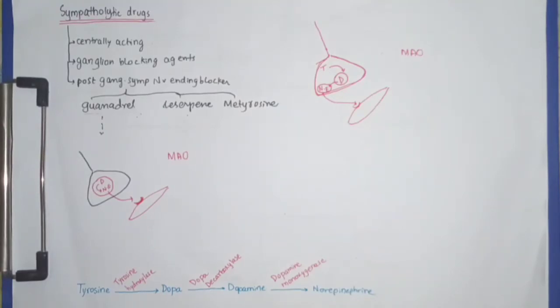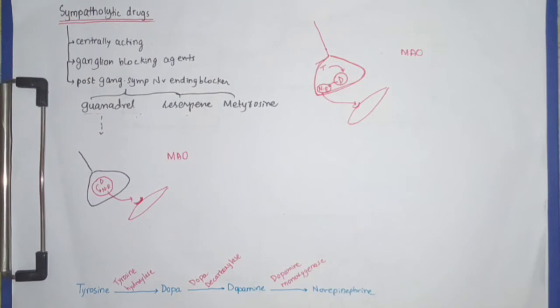Previously we discussed centrally acting sympathetic drugs. The next group of drugs we're going to talk about is ganglion blocking agents. Basically, ganglion blocking agents block the whole sympathetic ganglia, which leads to reduced sympathetic